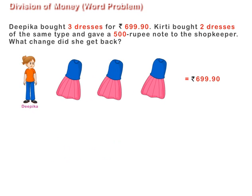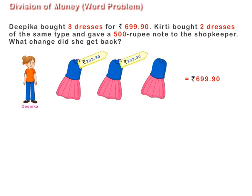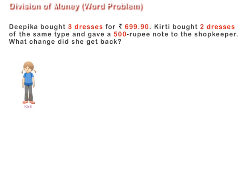Deepika paid Rs. 699.90 for three dresses. To find out the cost of one dress, we divide Rs. 699.90 by three. On division, we get Rs. 233.30. Thus, the cost of one dress is Rs. 233.30.